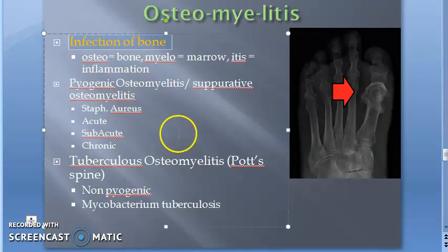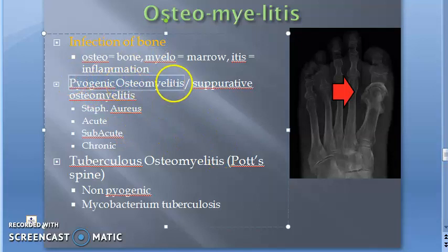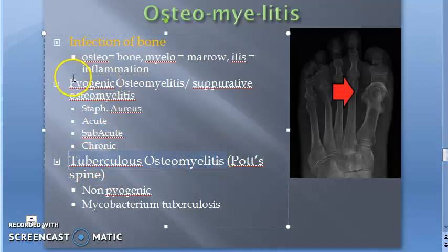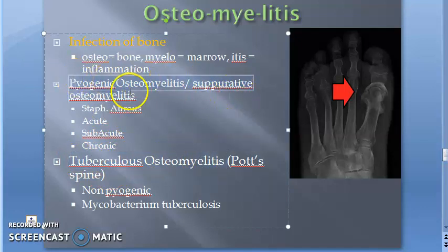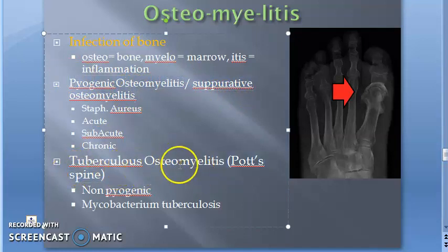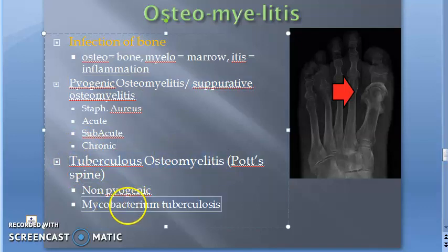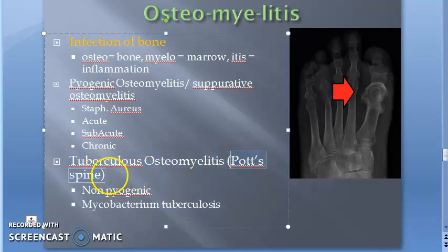Osteomyelitis is infection of bone. There are two types you should know: pyogenic osteomyelitis and tuberculosis osteomyelitis. Pyogenic means pus-forming — it is suppurative osteomyelitis. Tuberculosis osteomyelitis is caused by Mycobacterium tuberculosis, and it is also called Pott's disease, or Pott's spine if it affects the spine.